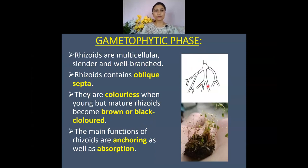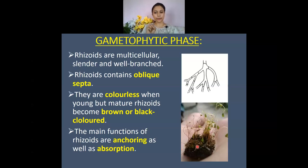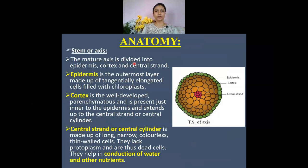The rhizoids are found at the lowermost part of the plant. They are well-branched, multicellular, and contain oblique septa. Normally they are colorless, lacking chlorophyll, but when matured they become brown or black. Their function is to provide anchoring to the substratum and to help in the absorption of minerals and water for the plant body of Funeria.